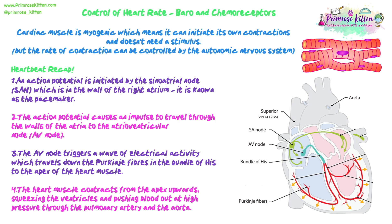So, we're really talking about controlling the frequency of impulses or the frequency of action potentials that are happening at the sinoatrial node. That's what the autonomic nervous system is going to control here — the rest of this process happens exactly as described. Regardless of how frequent those impulses are, the heartbeat will still happen in the same way.